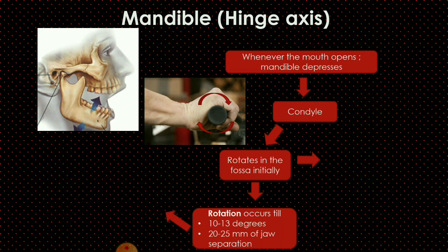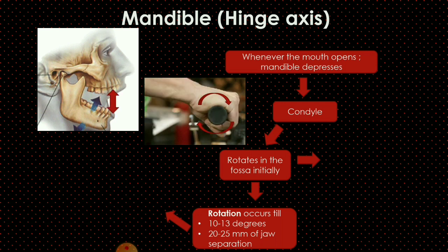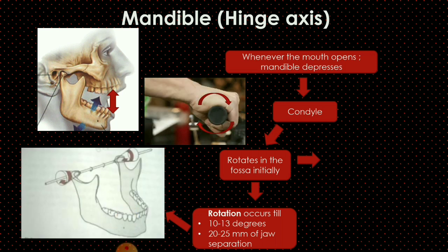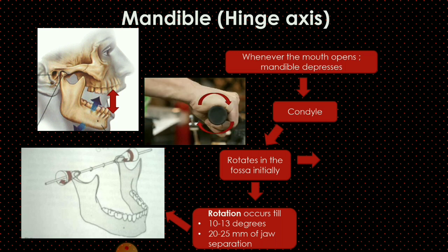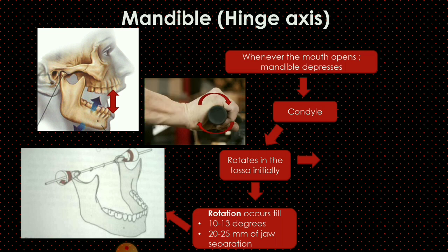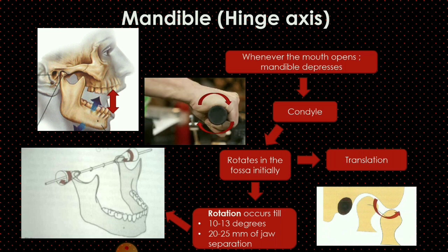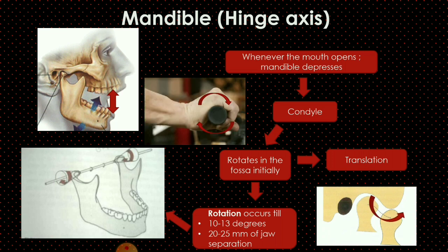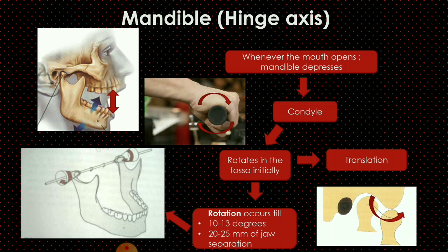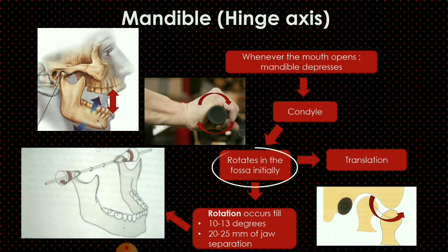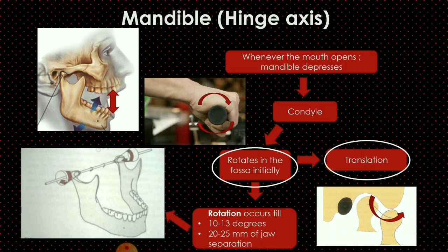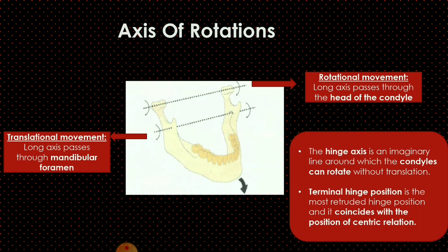This rotation occurs until there is 10 to 13 degrees of condylar opening and 20 to 25 mm of jaw separation. Once jaw separation exceeds 25 mm, the condyle present in the glenoid fossa starts moving in the downward and forward direction — this movement is called translation of the condyle. So to summarize: whenever the mouth opens, the condyle first undergoes rotation and then undergoes translation.